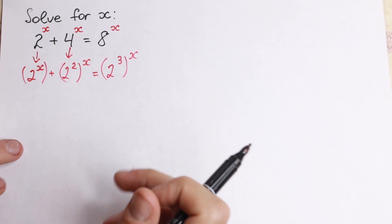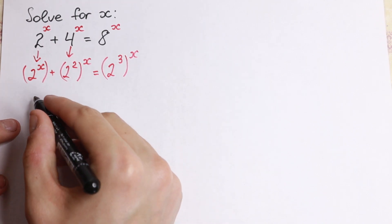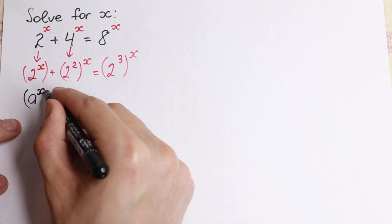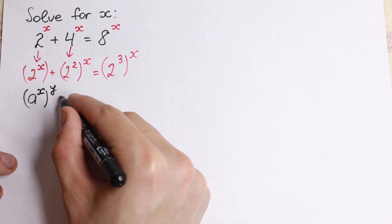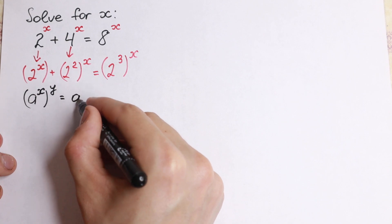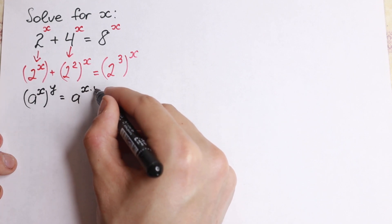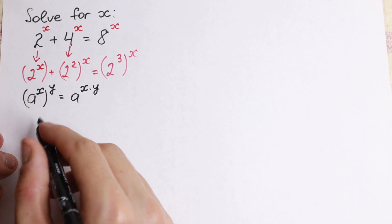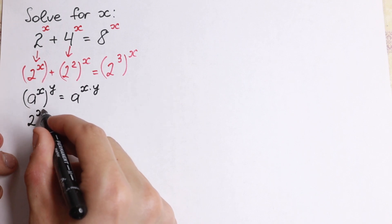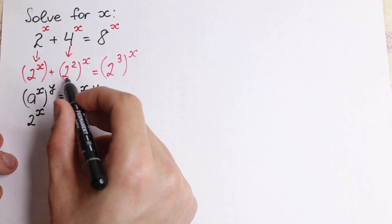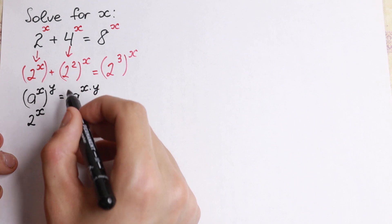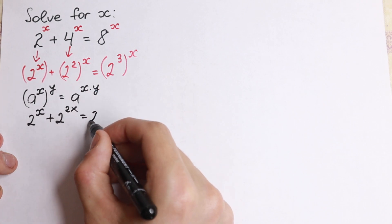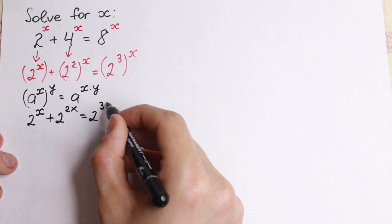Now we need a key rule: if we have a to the power x, raised to the power y, we write it as a to the power x times y — we multiply the exponents. Applying this, we get 2 to the x plus 2 to the power 2x equal to 2 to the power 3x.